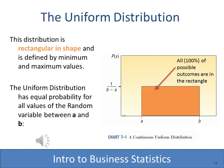Uniform distribution means that every value between A and B, as you see in the rectangle, has an equal probability. We compute the area of the rectangle by length times width, and 100% of all possible outcomes fit within that rectangle. After establishing A and B, the probability of any value in a continuous uniform distribution is simply 1 divided by B minus A.